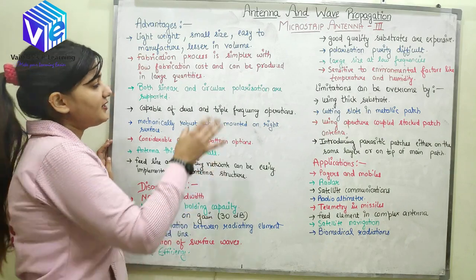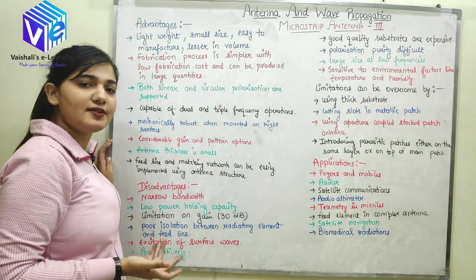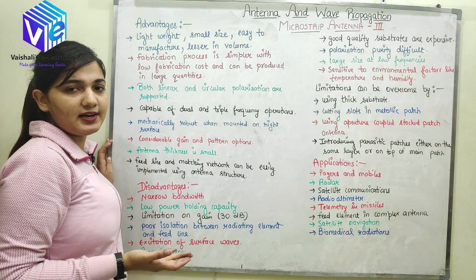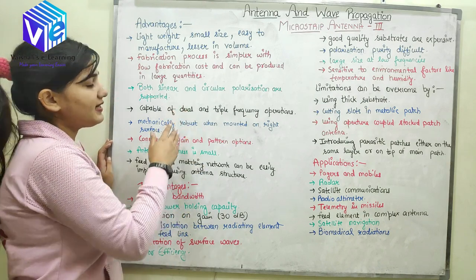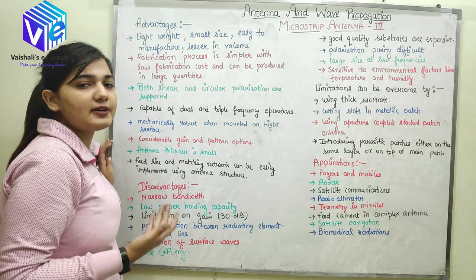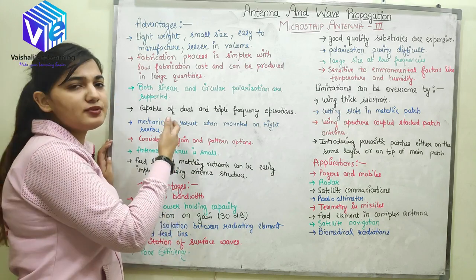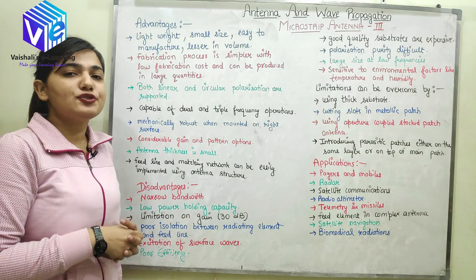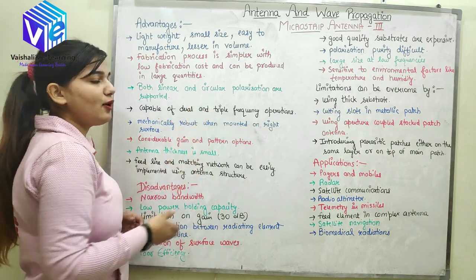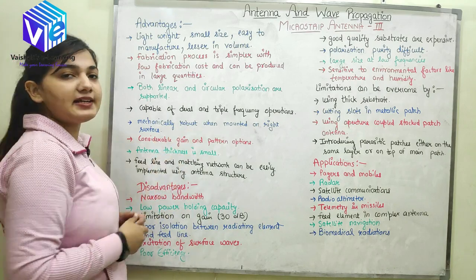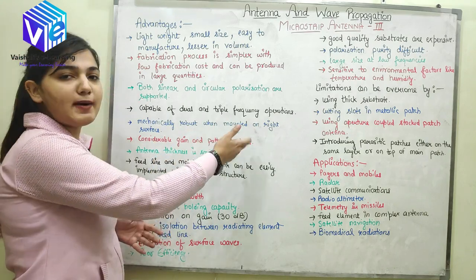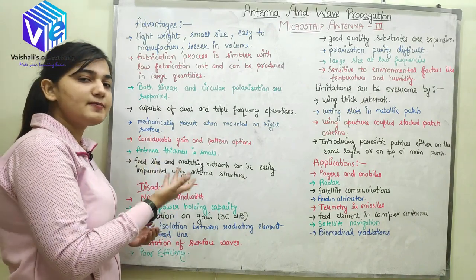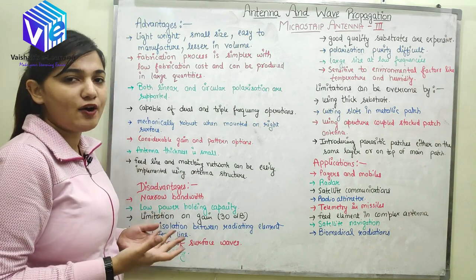The third advantage is that it provides linear and circular polarization modes — it can give linear polarization as well as circular polarization. The next advantage is that it is capable of dual or triple frequency operations, so we can use it at various frequencies without changing the structure of the antenna; from the same hardware we can operate at dual or triple frequencies. The next advantage is that it is mechanically robust when mounted on the right substrate.